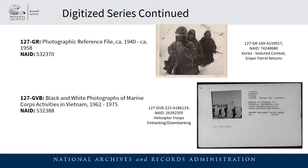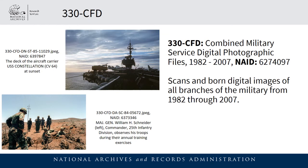You can see an example of the photographic cards and available caption information on the slide. All of our military photographs from 1982 to 2007 are digitized and grouped into one series known as 330-CFD — meaning all photographs from the various branches of the military during that time period can be found in our online catalog in this series. The series has both scans of analog photos as well as born-digital images, meaning photos that were produced and only exist in a digital format.